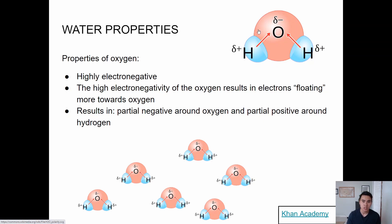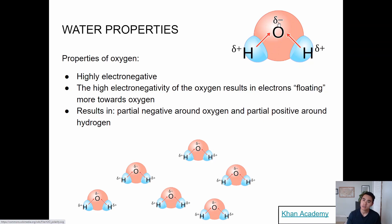So if you imagine the electrons floating around, they would prefer to be near the oxygen. The electrons hover more likely towards the oxygen, which results in a partial negative charge around the oxygen. That delta-minus symbol is an indicator for partial charge. Because the electrons are hovering around the oxygen, they're not as concentrated around the hydrogen — so hydrogen has a more positive charge, giving it a partial positive charge.